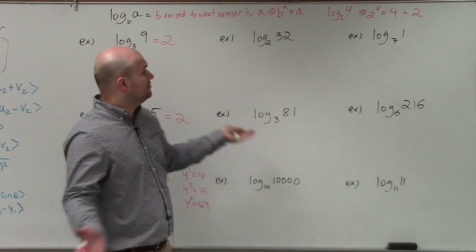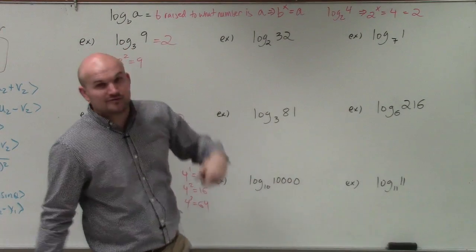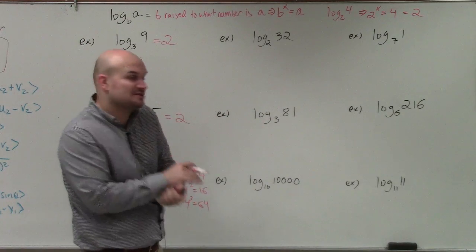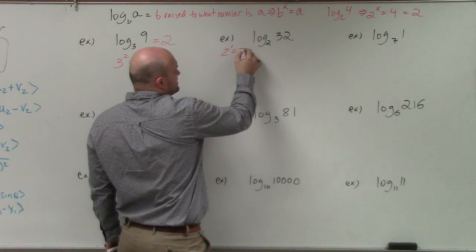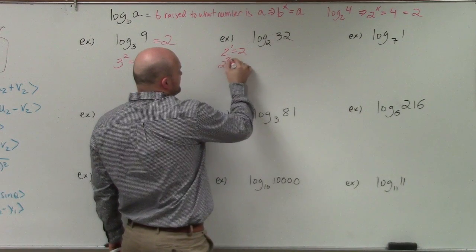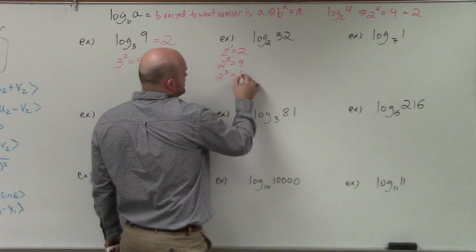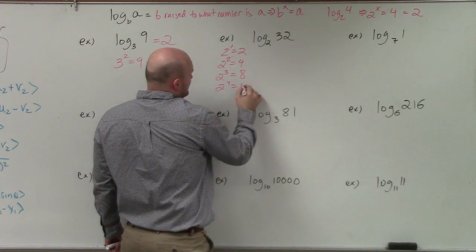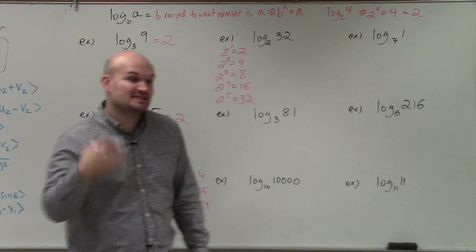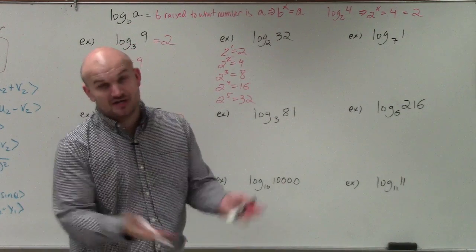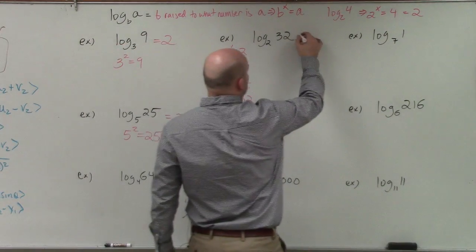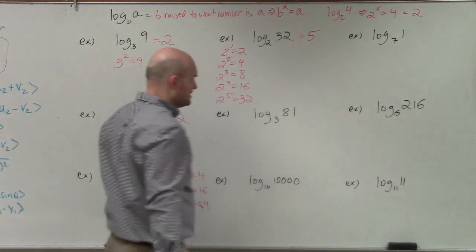Over here we have 2 and 32. You might know 2 squared is 4 and 2 cubed is 8, but may not know if it gets up to 32. So let's write them out. Once you get used to working with these numbers, you'll start remembering them and won't have to write them out every time. 2 to the fifth is 2 times 2 times 2 times 2 times 2. So 2 raised to what number gives you 32? Without a calculator, that's going to be 5.